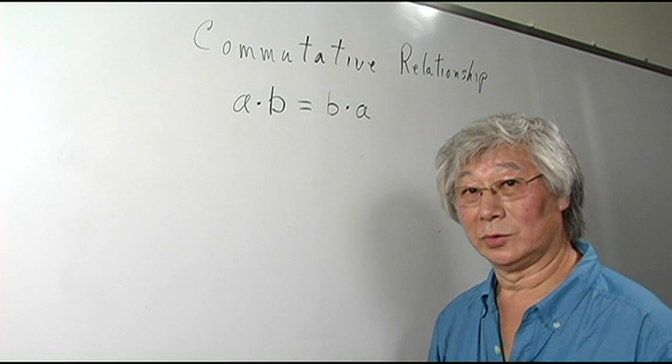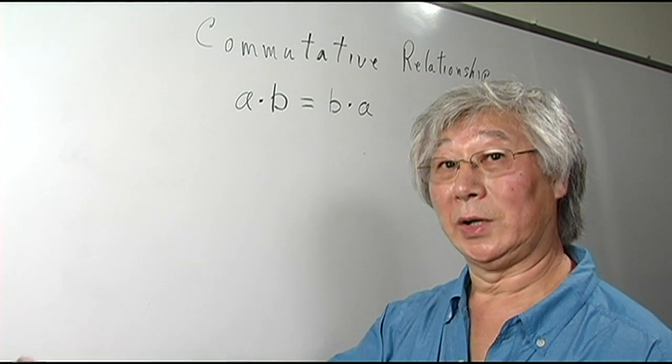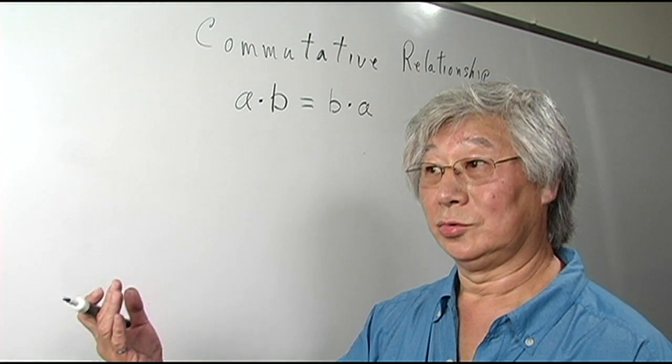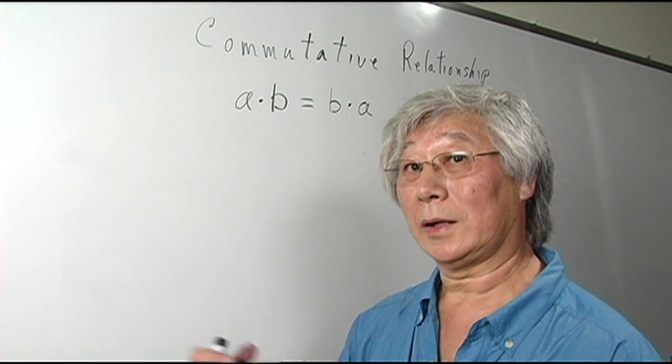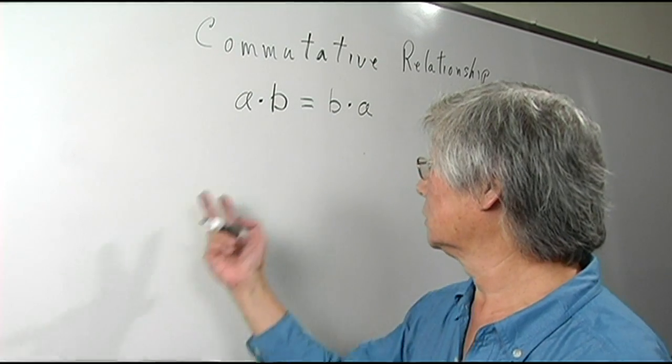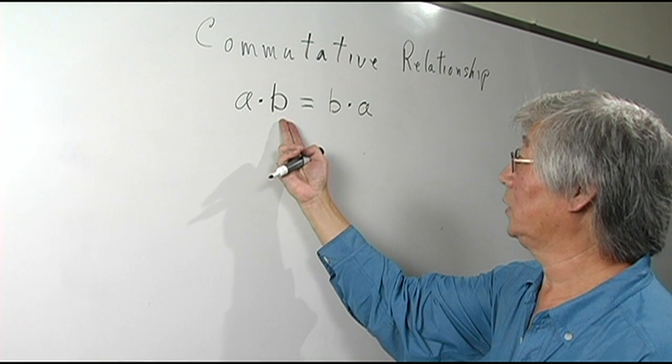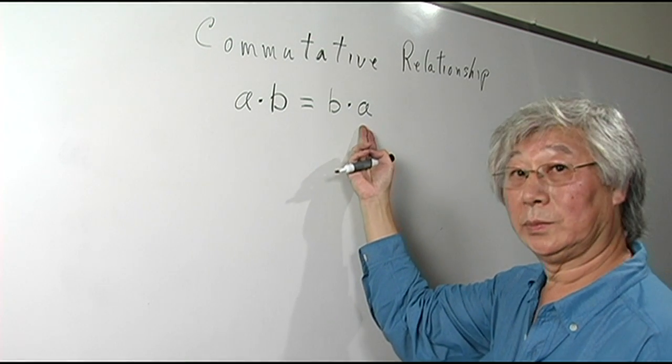For example, when you drive from home to work, you travel so many miles. When you drive from work back home, it's the same distance. So it's the same number of miles. For that reason, A times B is equal to B times A.